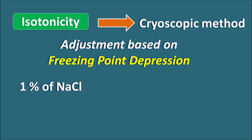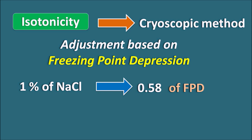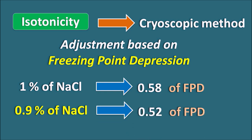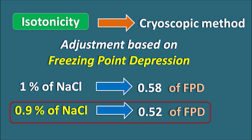For example, 1% sodium chloride solution produces a freezing point depression of 0.58, whereas 0.9% sodium chloride produces a freezing point depression of 0.52. We already know that 0.9% sodium chloride is isotonic with body fluids. So the 0.9% sodium chloride produces 0.52 freezing point depression, and we need to adjust tonicity such that the total freezing point depression of the solution is 0.52.